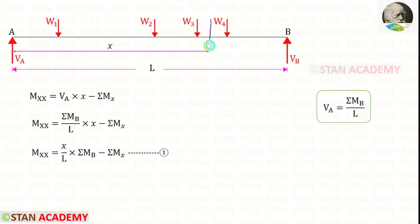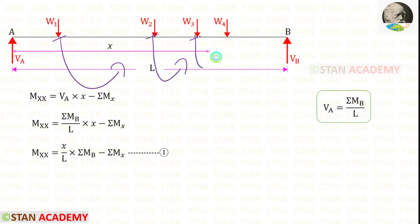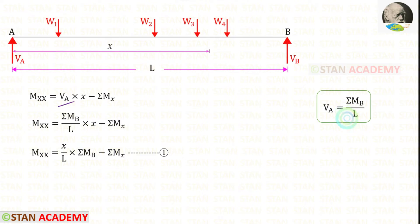Now, in the beam, let us make a section XX at a distance of X from point A. In this section, let us find the moment MXX. Va is acting in the clockwise direction so that it will be positive and the distance is X. These 3 loads are acting in the anticlockwise direction. Let us keep the summation of the moments due to these 3 loads as sigma MX. Since these loads are acting in the anticlockwise direction, sigma MX will be negative. For Va, we can apply this. Finally, we will get this equation. Let us keep this equation as number 1.